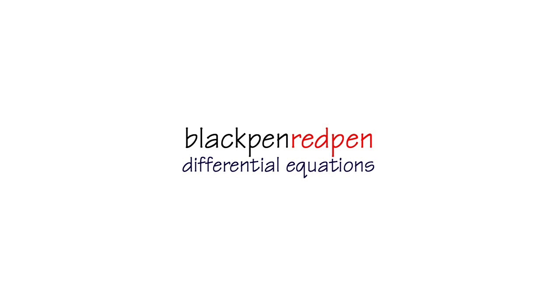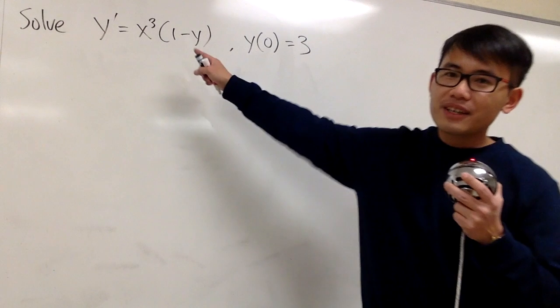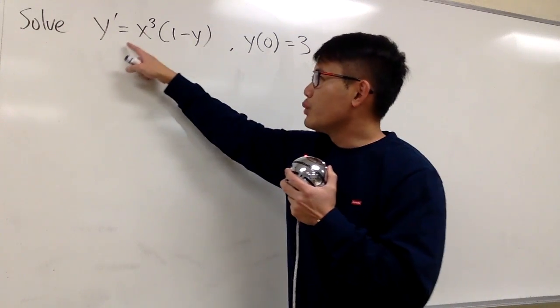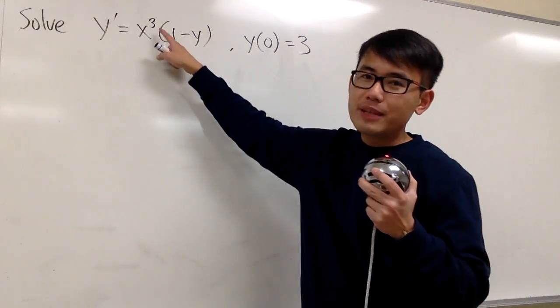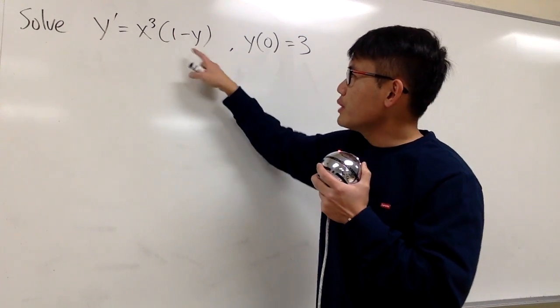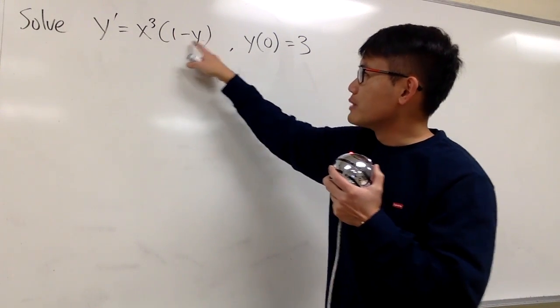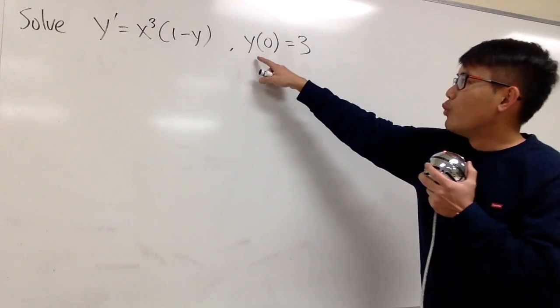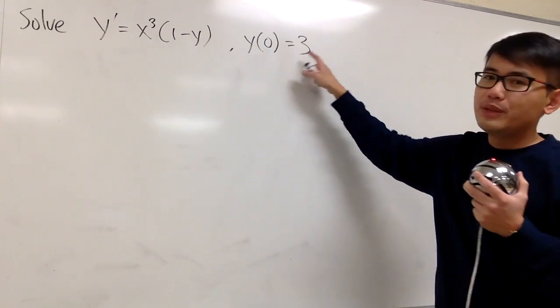Let's solve this differential equation. We have y' is equal to x to the third power times the parentheses with 1 minus y inside, and we also know y of 0 is equal to 3.